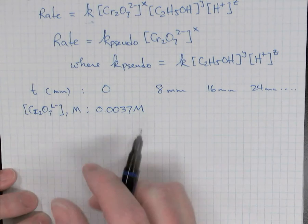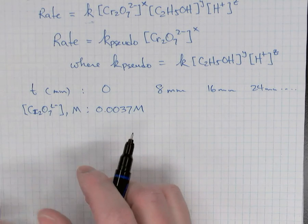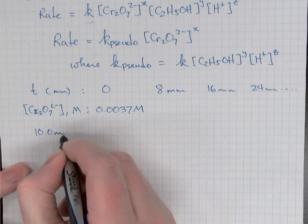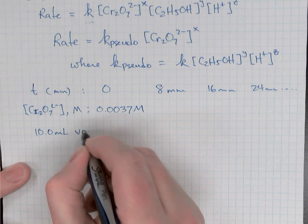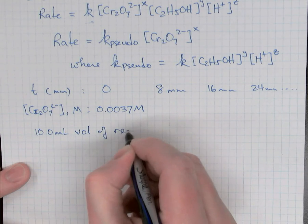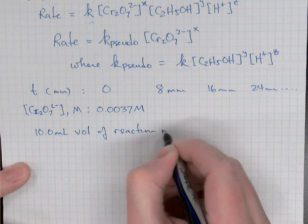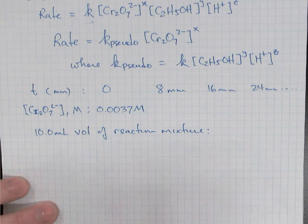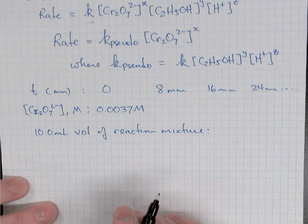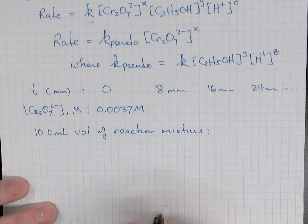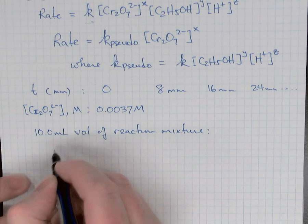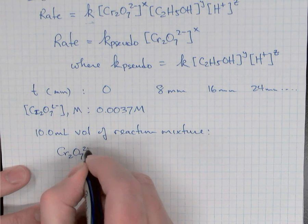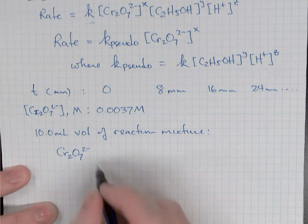To do that, it was kind of complicated. What we did was we withdrew a 10 milliliter, that's going to be important to remember, 10 milliliter volume of the reaction mixture. We withdrew that and we added immediately to that four milliliters of a three percent KI solution, potassium iodide. That led to this redox reaction, the dichromate that was still in the 10 milliliter volume at that time reacted with the iodide ions from the KI solution.